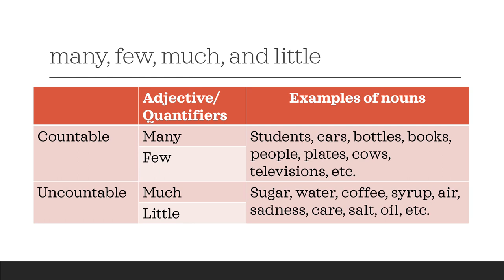Many and few are used to explain countable nouns — for example: students, cars, bottles, books, people, plates, cows, televisions, etc. While much and little are used to talk about uncountable nouns — for example: sugar, water, coffee, syrup, air, sadness, care, salt, oil, etc. So we can say 'many students,' 'many cars,' 'few people,' 'few televisions,' and for uncountable ones: 'much sugar,' 'much water,' 'little sadness,' 'little care,' etc.